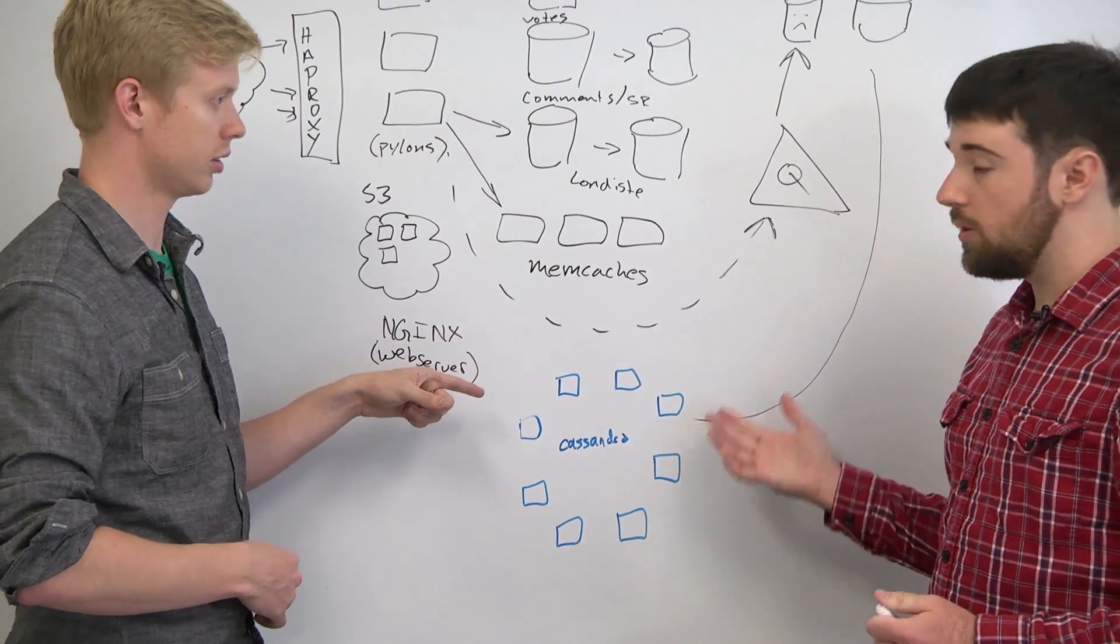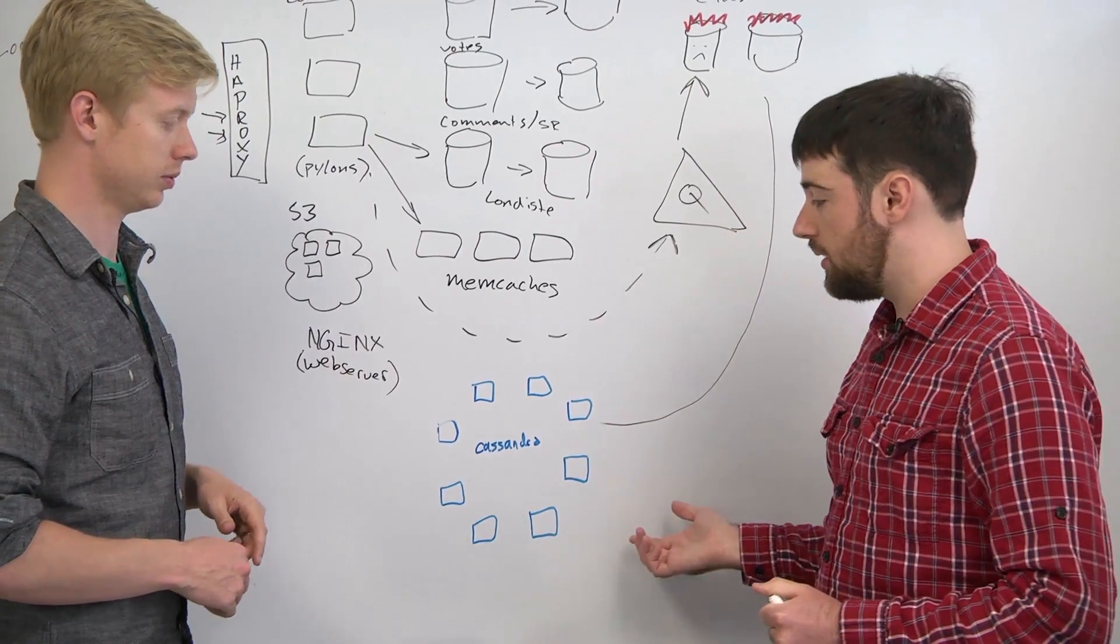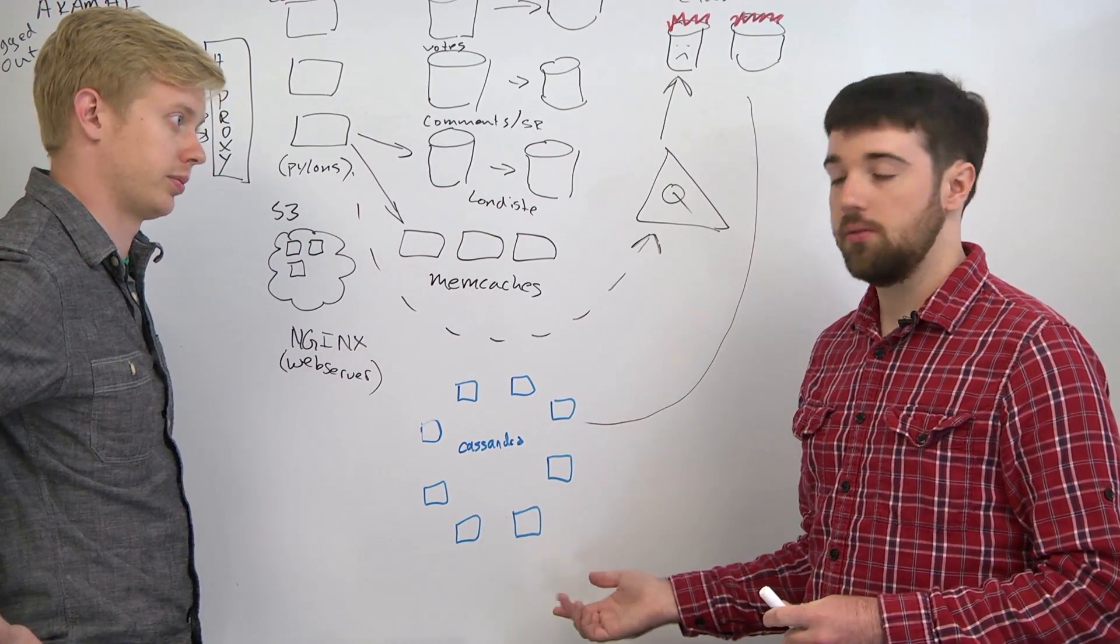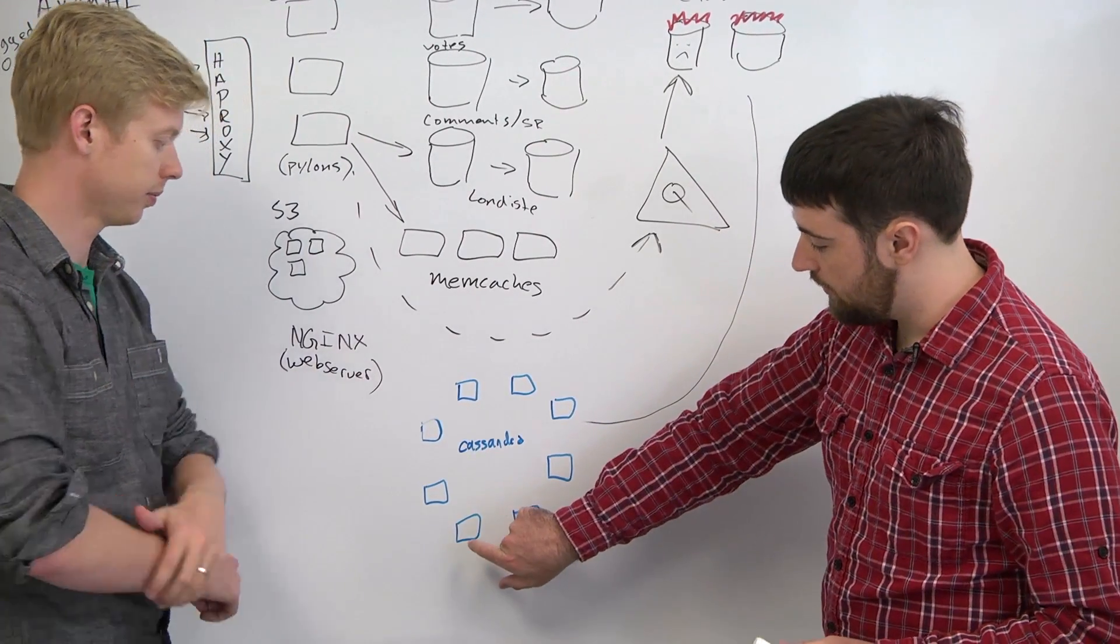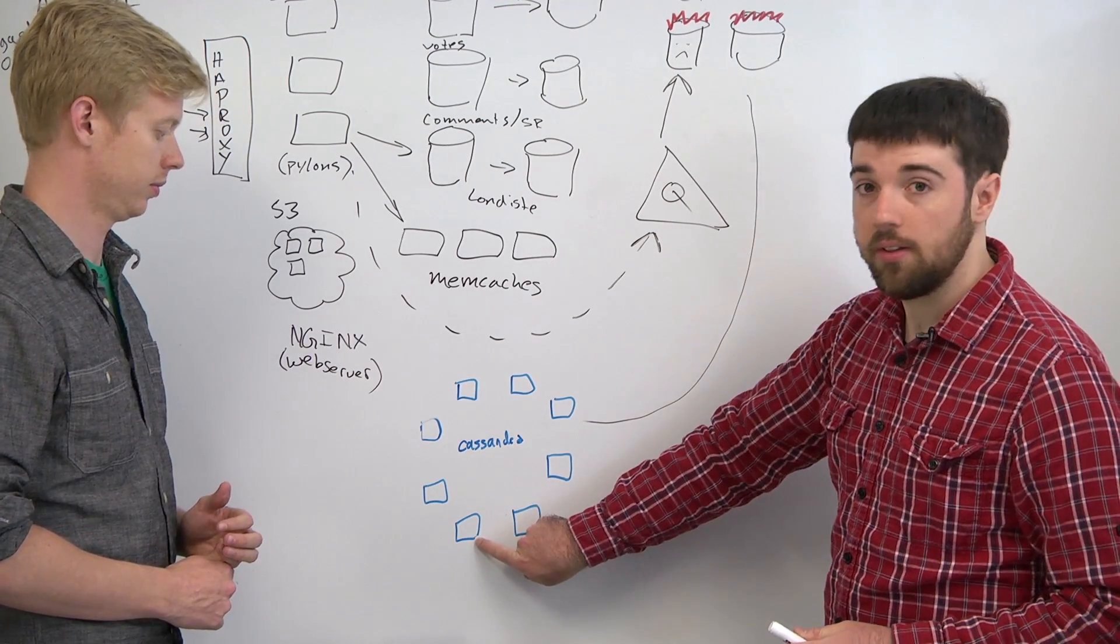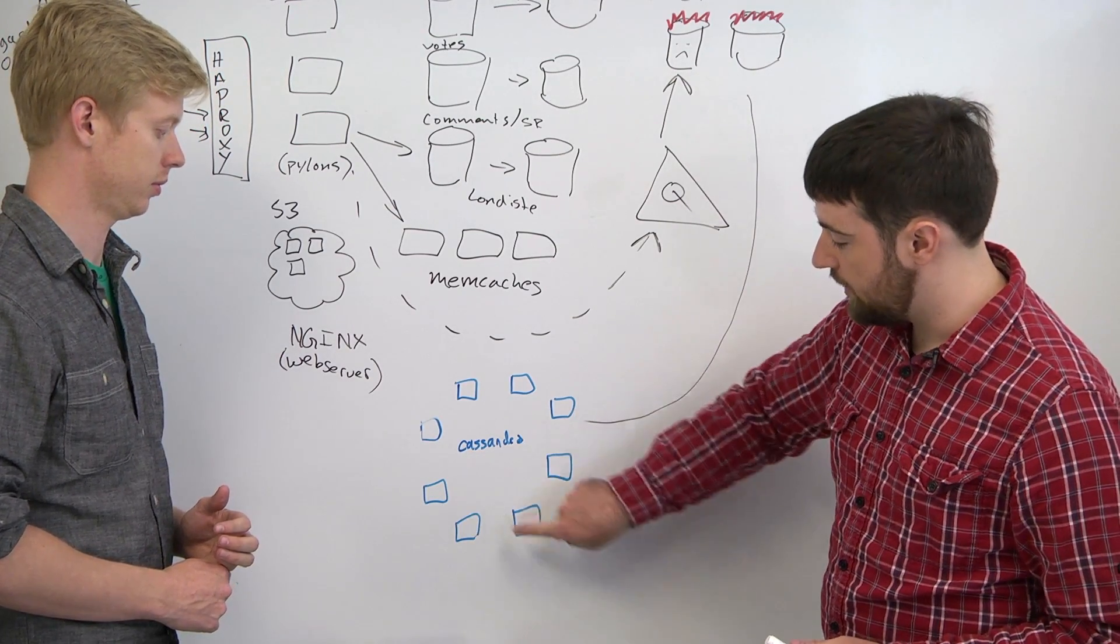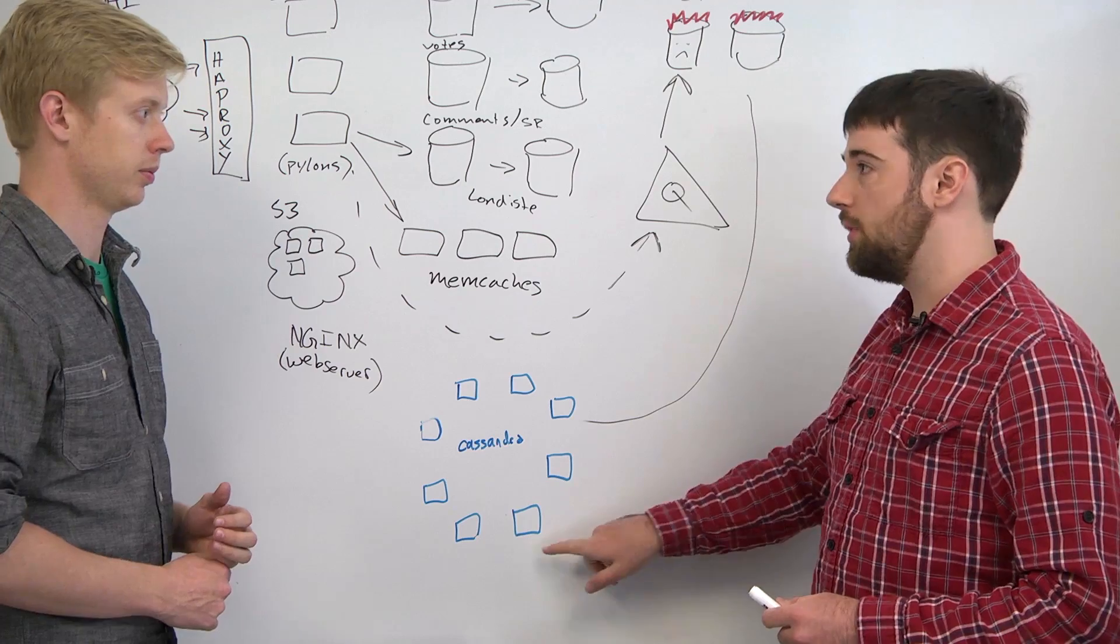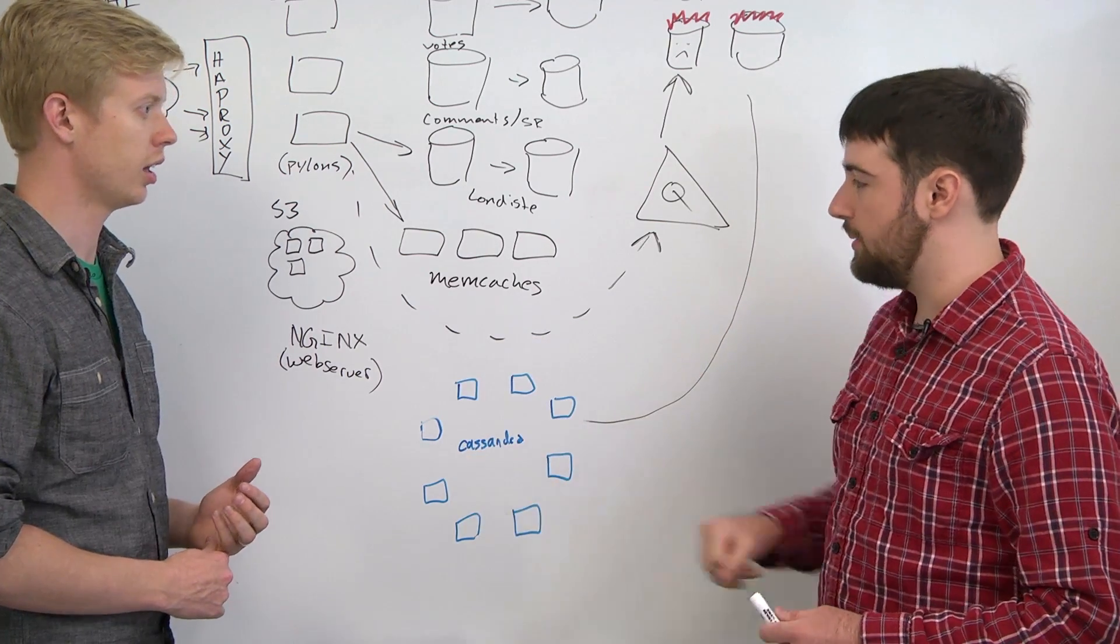Now there is some overlap. It's configurable, but in our case we're using a replication factor of three, which means that if a piece of data lives on this node, it is also on this one and this one. And that happens all around the ring.